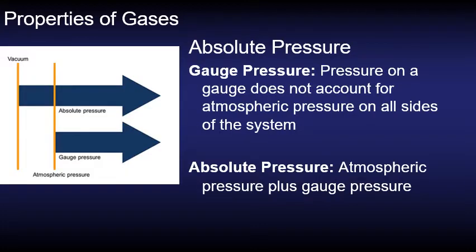So what do we mean by absolute pressure? First of all let's look at gauge pressure. If we look at a pneumatic system we will usually see a gauge and the gauge will show us the gauge pressure which doesn't account for the atmospheric pressure that's on all sides of the system. So we're surrounded at any given time by a certain amount of air pressure. In order to calculate the absolute pressure we need to add in that atmospheric pressure plus the gauge pressure.